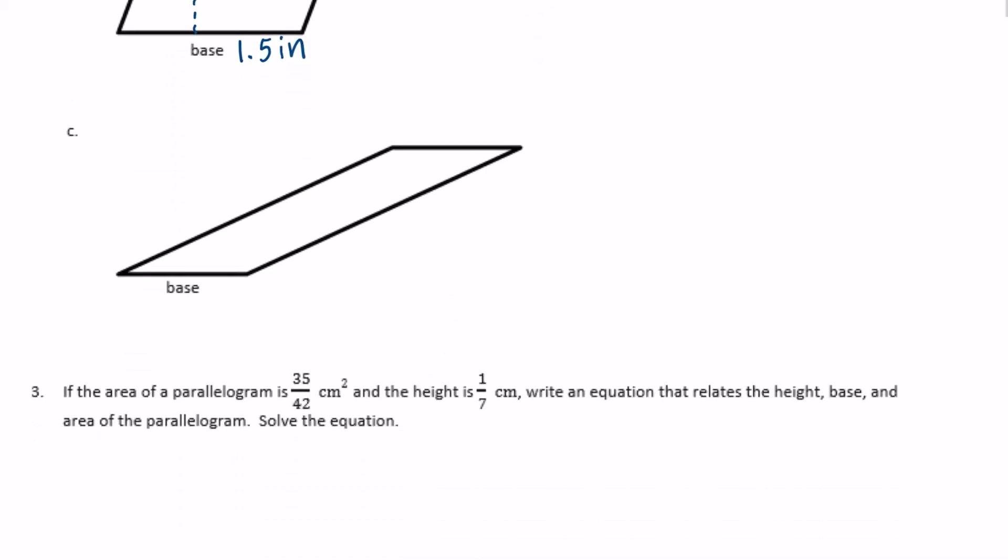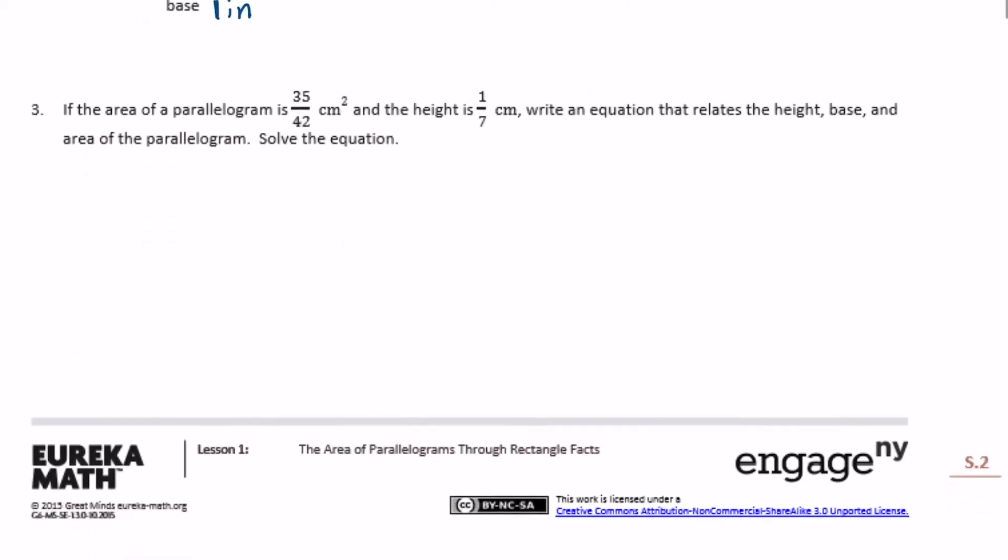C, we measure the base, so the base here is one inch. Now it's kind of tricky to find the height here, so we're going to have to extend this out. So the base goes all the way out there, and here's the top. Then this part right here is the height of that parallelogram. If we measure that, that is also one inch. So we have one inch by one inch would be equal to one inch squared.